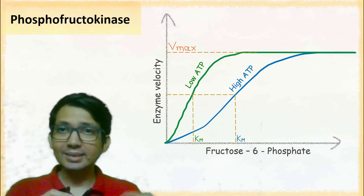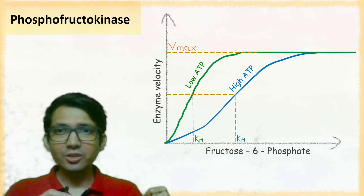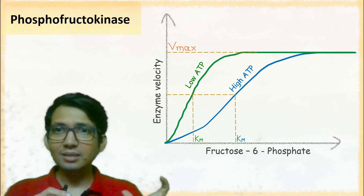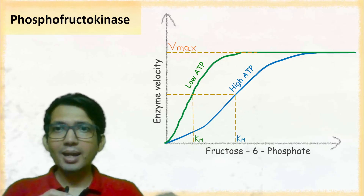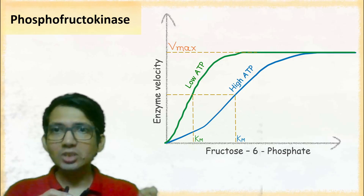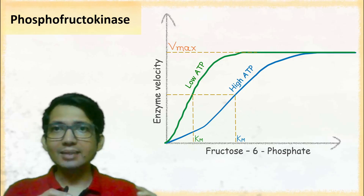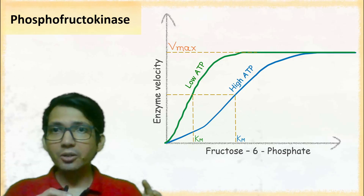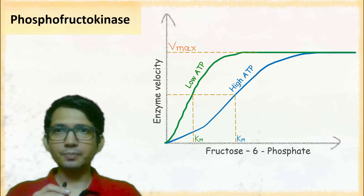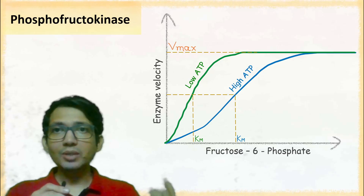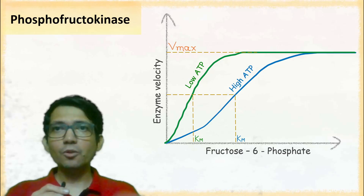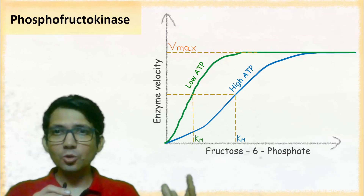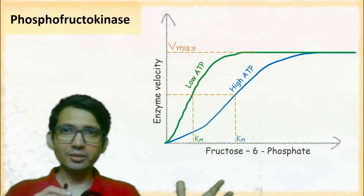Besides ATP, the other factor that regulates this enzyme is pH. Acidic pH acts as an inhibitor for this enzyme. This is how the enzyme phosphofructokinase is regulated.